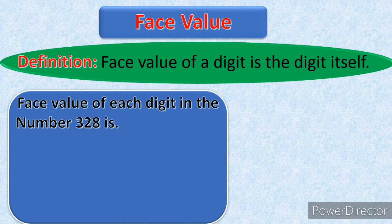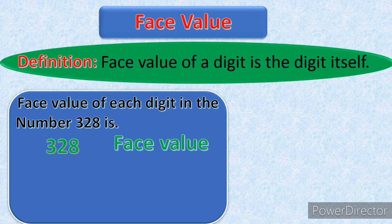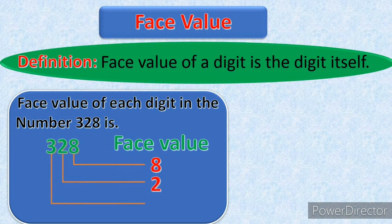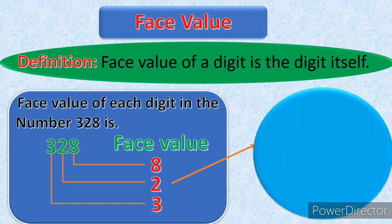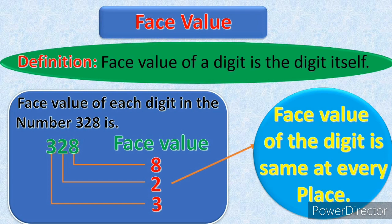The example is: find the face value of each digit in the number 328. We will write the number 328 and its face value. Face value of 8 is 8. Face value of 2 is 2. Face value of 3 is 3. We should remember one thing: face value of a digit is the same at every place.